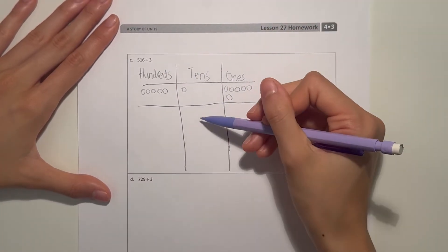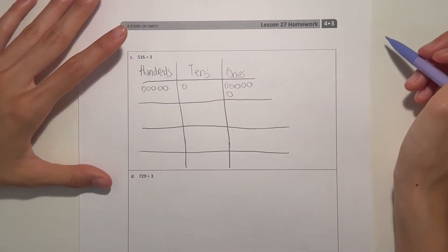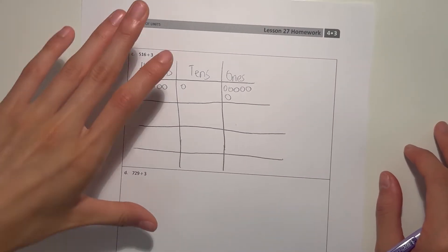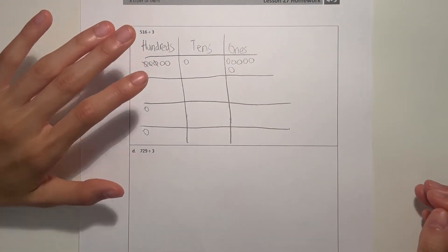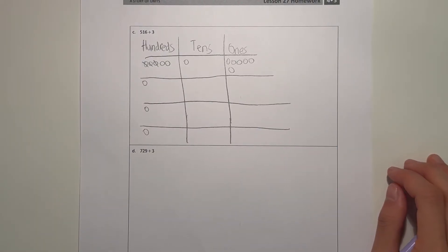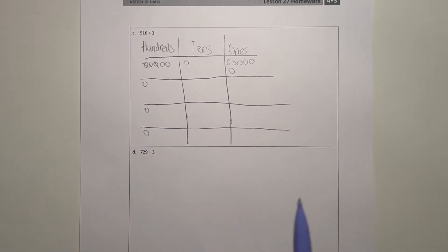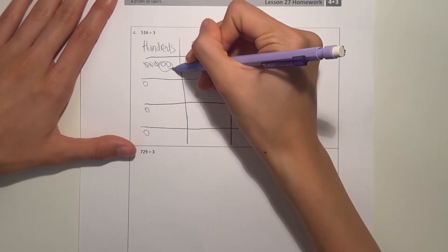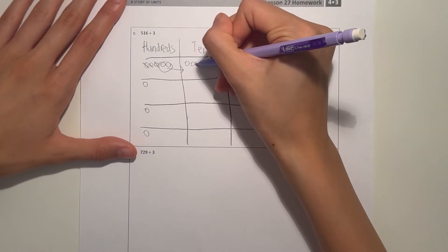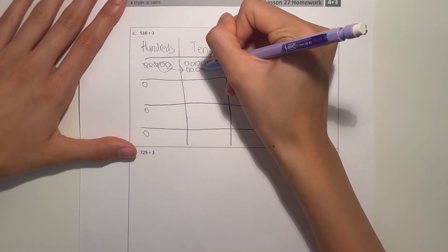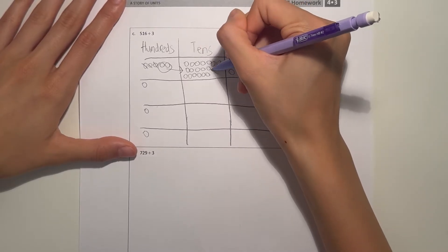So we divide by three, so we need three spaces or sections here. First we look at the hundreds — one, two, three — and now we have two left over. They all need to have the same number of disks, so we have two left over, and we regroup that to the tens. This becomes twenty tens.